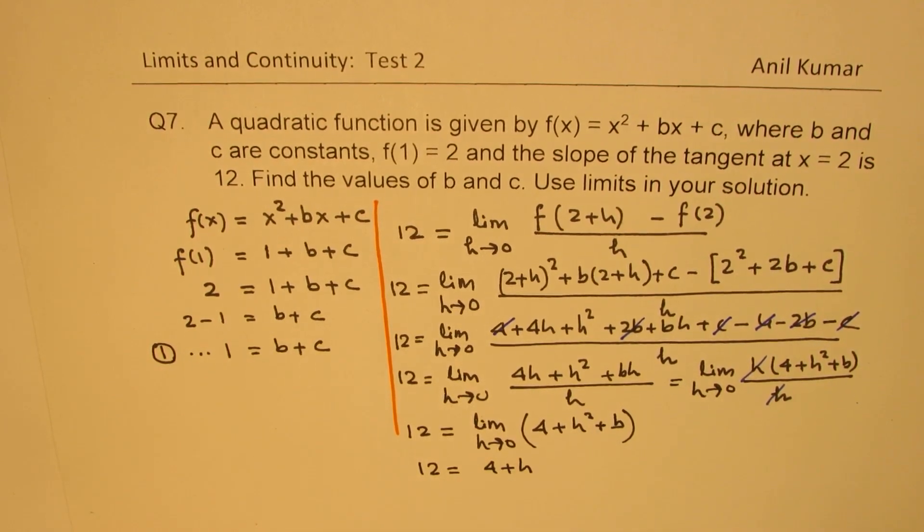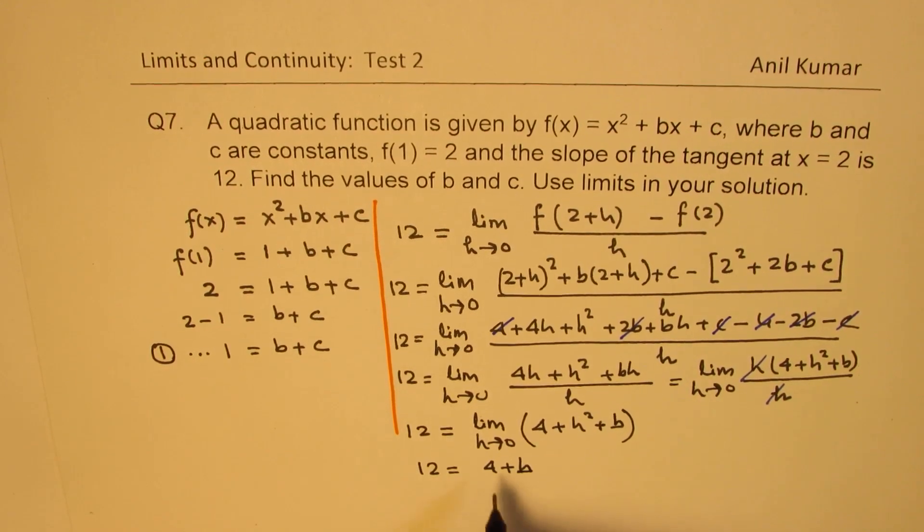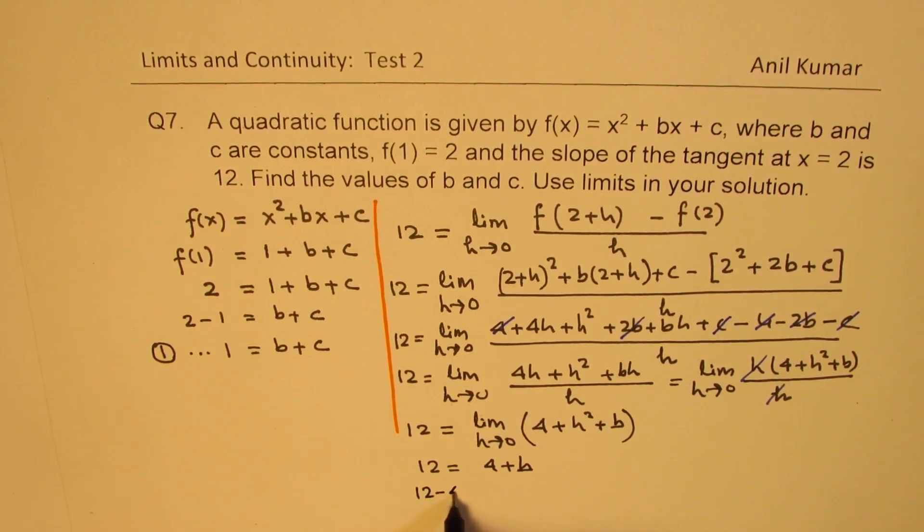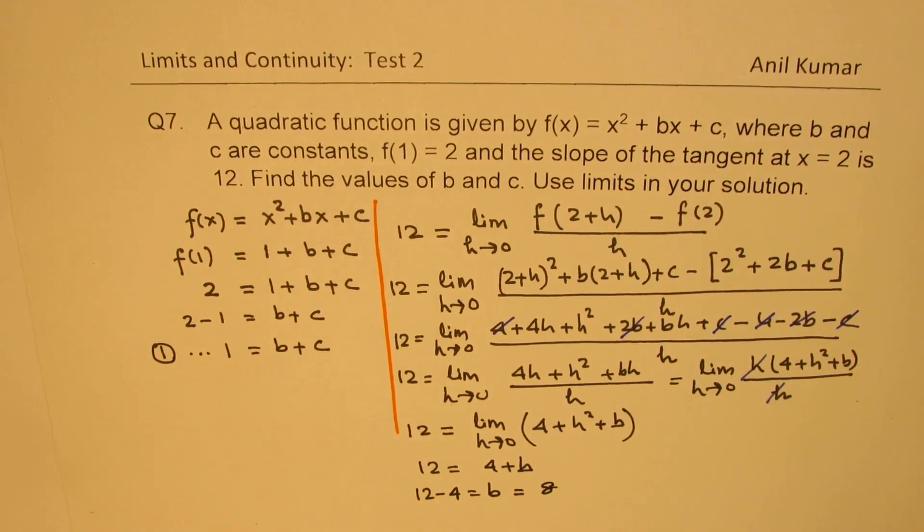So from here we get 12 = 4 + b, since h approaches 0. Or we get 12 - 4 = b which is 8. So we get the value of b as 8.